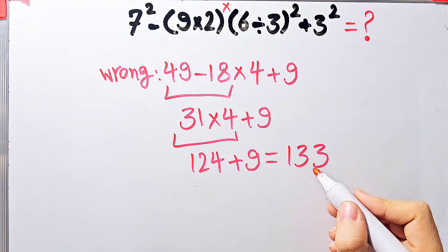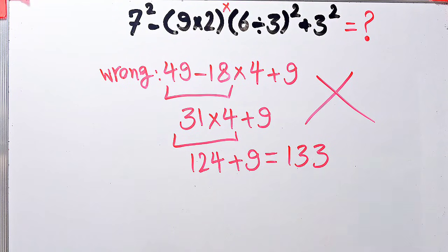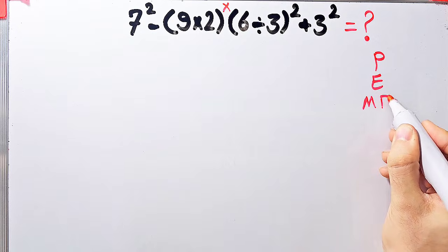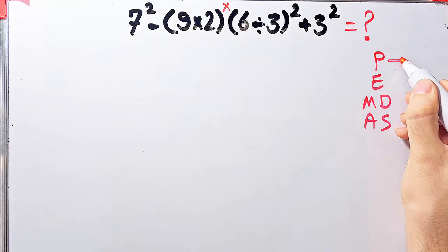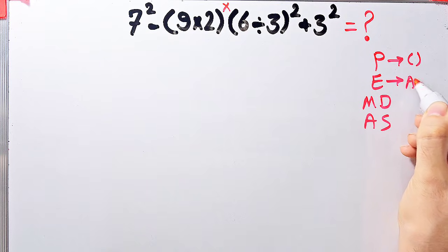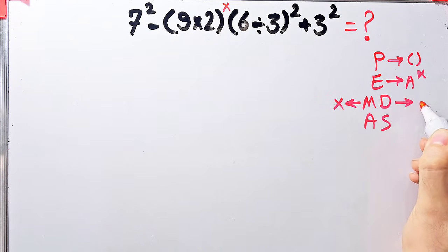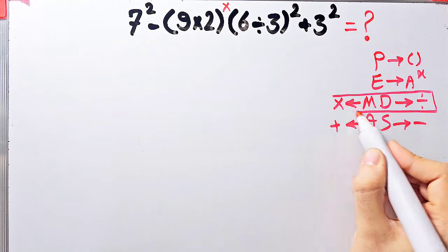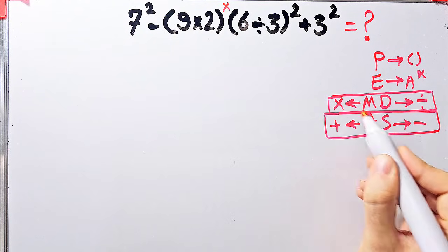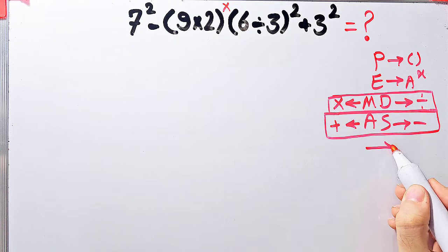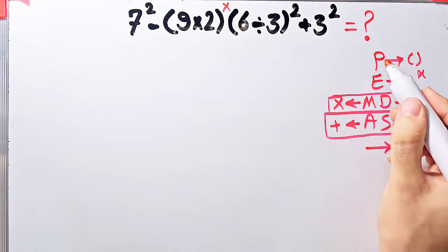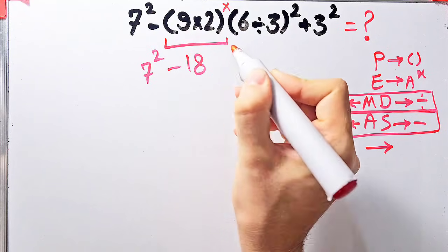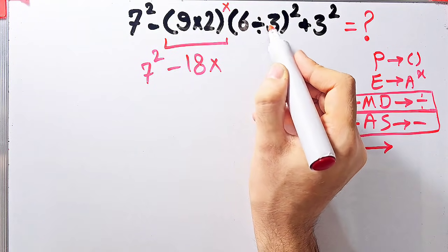To solve this correctly we follow the PEMDAS rule. Multiplication and division have the same priority; addition and subtraction have the same priority; when both appear we go left to right. First, simplify the parentheses: 9 times 2 equals 18. Now we have: 7² minus 18, times 6 divided by 3 — which equals 2 — all to the power of 2, plus 3².